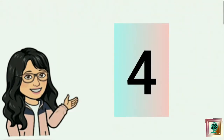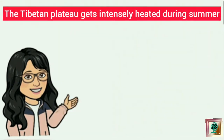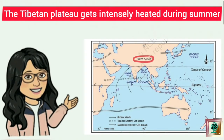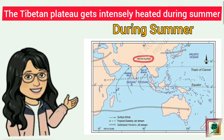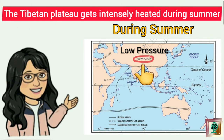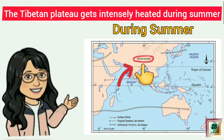The fourth factor is that the Tibetan plateau gets intensely heated. During summer, the Tibetan plateau gets intensely heated, which results in strong vertical air currents and the formation of low pressure over the plateau. As a result, the plateau region attracts wind from the Indian landmass, and wind blows from the Indian landmass towards the Tibetan plateau in the summer season.